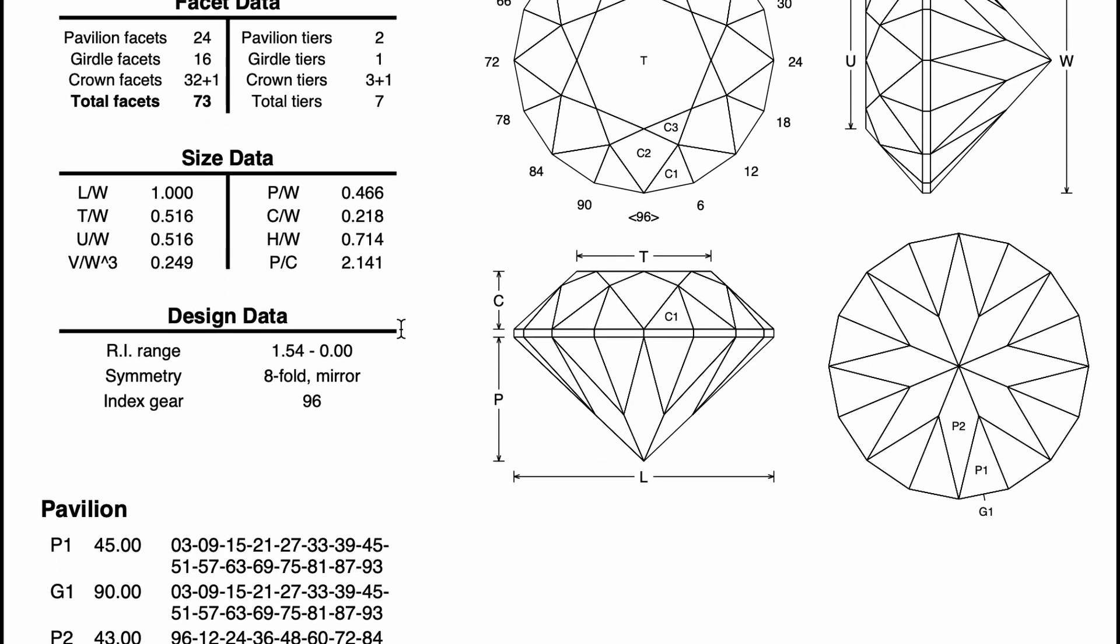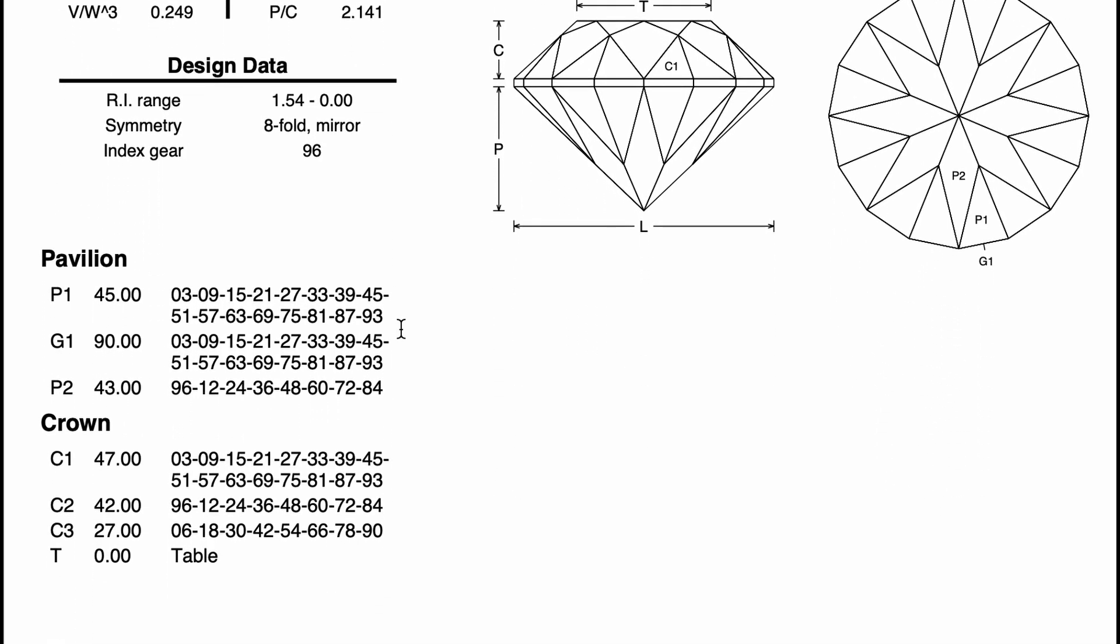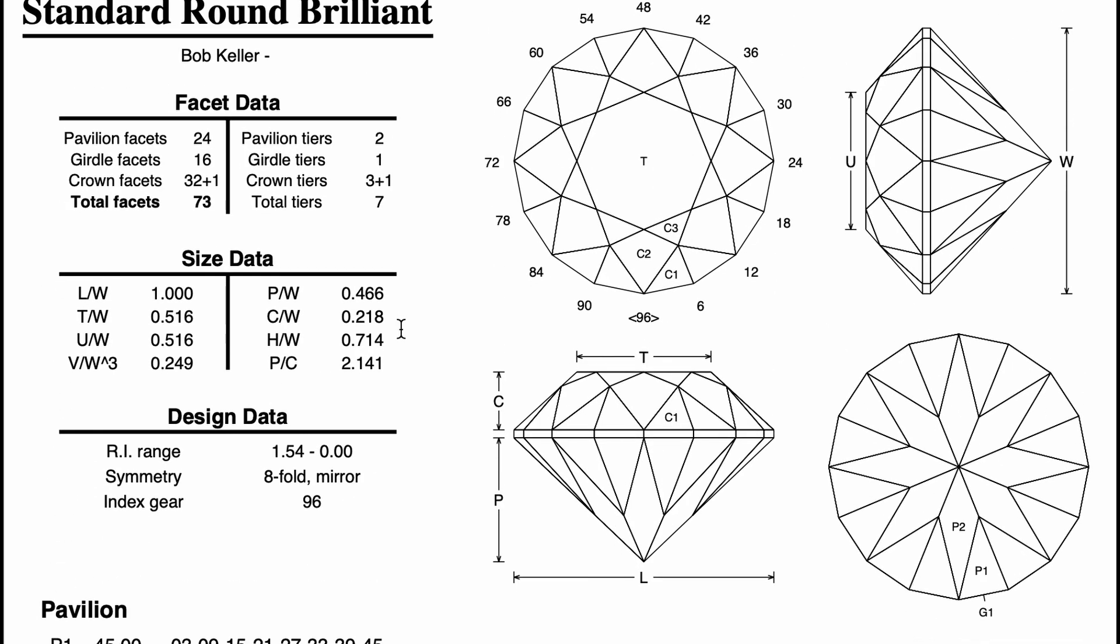Much better to find that out now than after you transfer and start cutting the crown. Because if that happens, you either need to make your crown much shallower, which can lead to faceter windowing, or you lose your girdle and have to transfer back and recut the pavilion. It's a real drag to have to go backwards in grit and lose the polish on a stone.